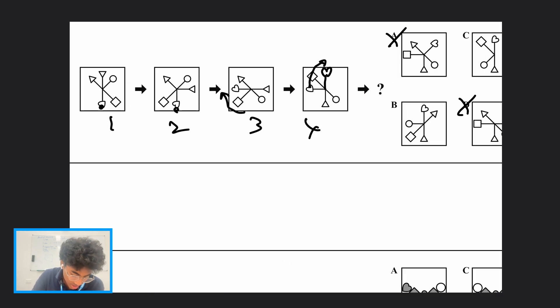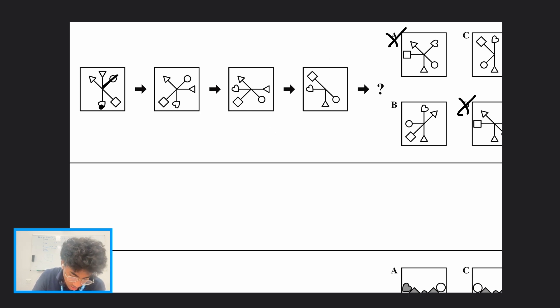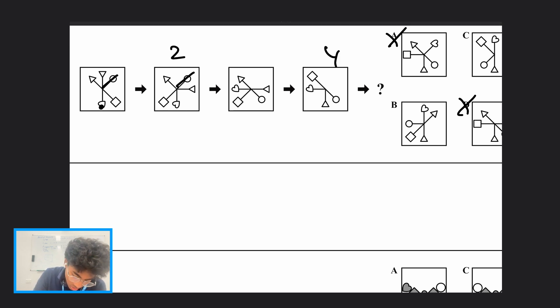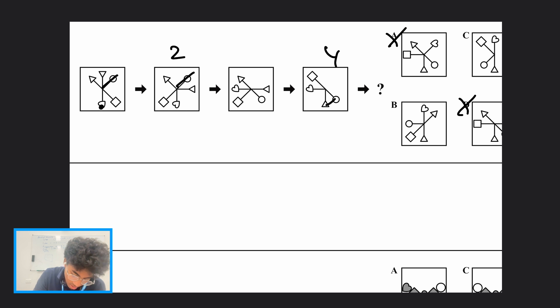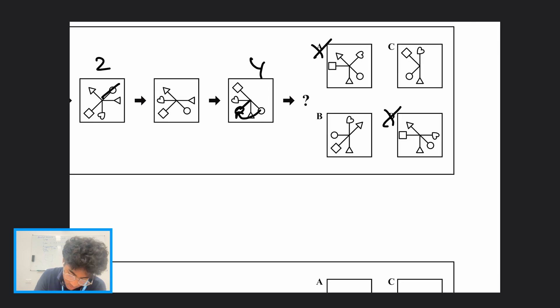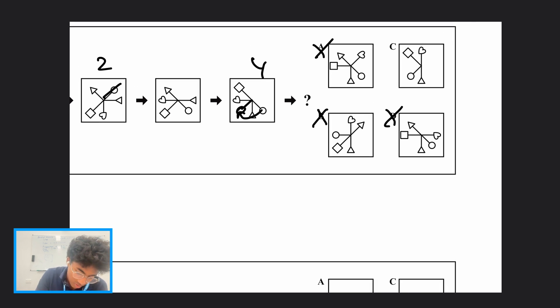Now let's look at the circle. Every second image the circle moves clockwise. It has already stayed still, so now it's time to move — and it should end up in this new position. That means we cross out option B, and we're left with option C as the final answer.